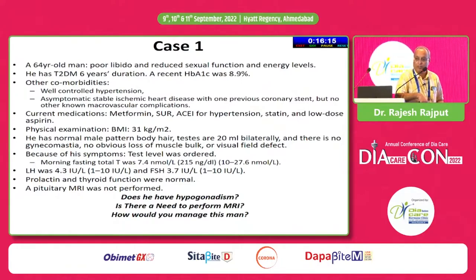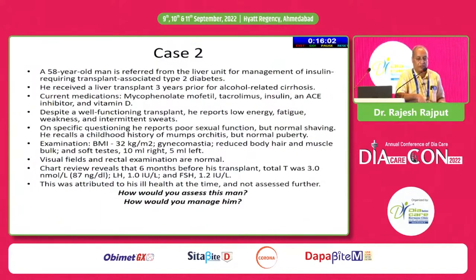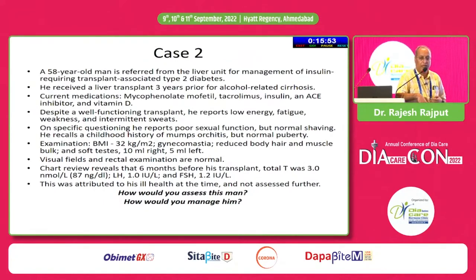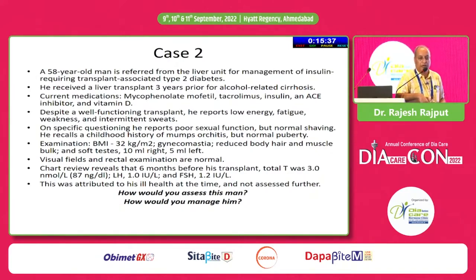Those are the three key questions. Now, the next case: we are living in an era where a large number of patients are undergoing transplants. A 58-year-old man underwent a transplant and subsequently developed diabetes; he is on insulin therapy. His current medications include immunosuppressives — mycophenolate mofetil and tacrolimus — along with insulin, an ACE inhibitor, and vitamin D.